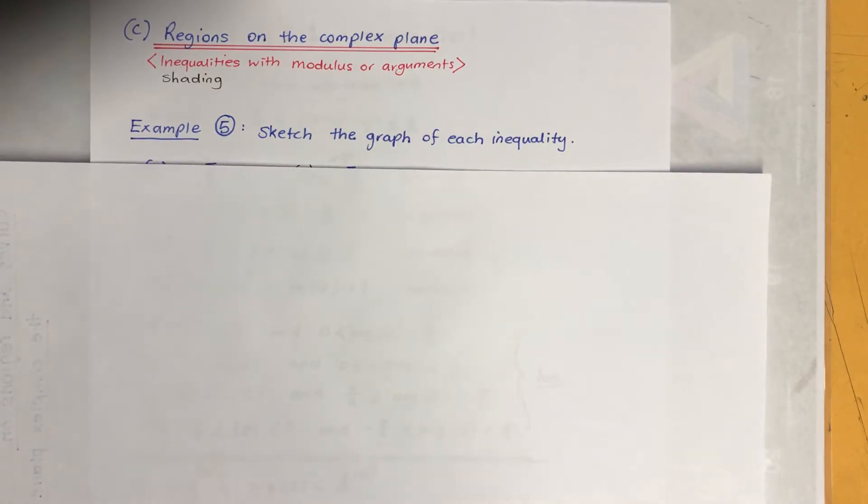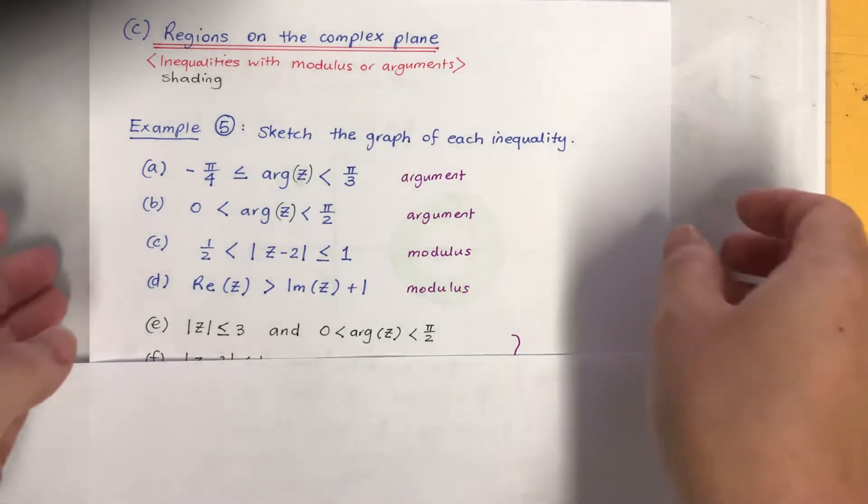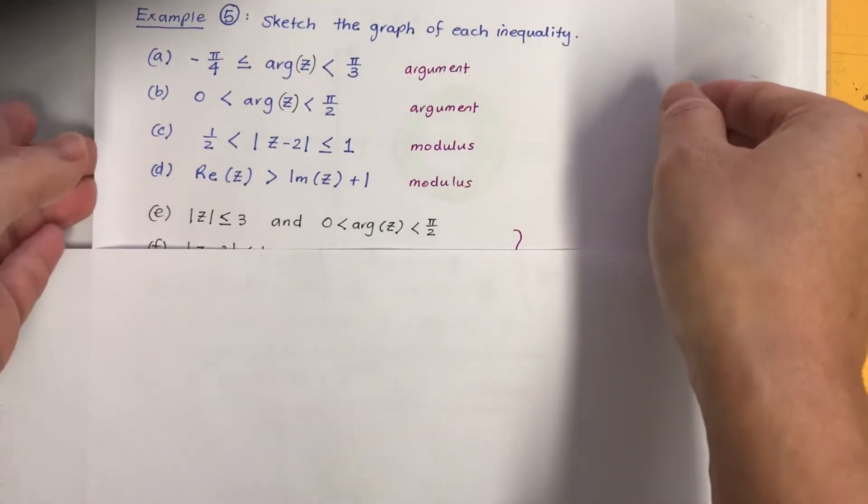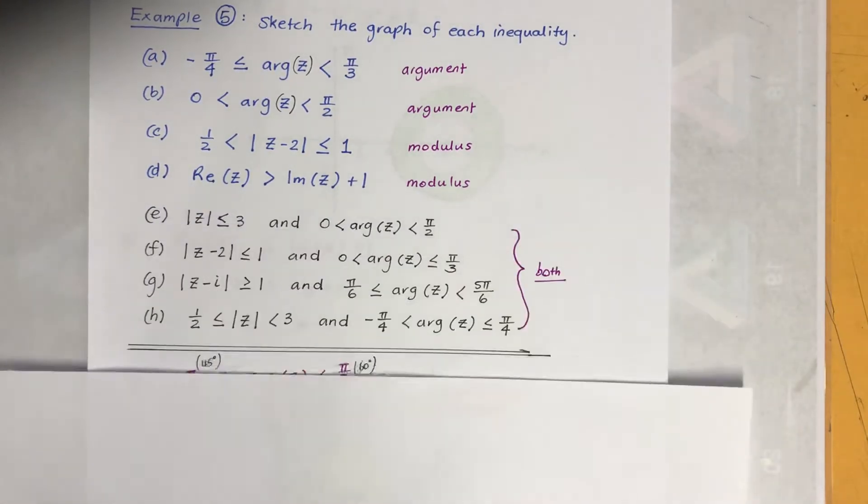Example five: sketch the graph of each inequality. So there are lots of examples. First four, it's just basics like using argument or modulus, not too bad. The last four we're using both.